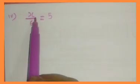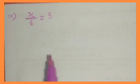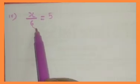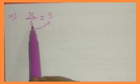Now, fourth question: x by 6 is equal to 5. We have to find the solution of this equation. So we transpose this 6 to that side. Here it is in the denominator, means it is in division. When it goes to this side, it will go in the numerator.